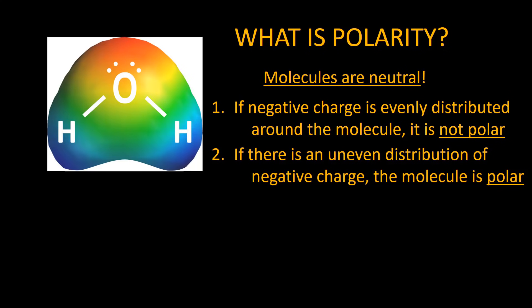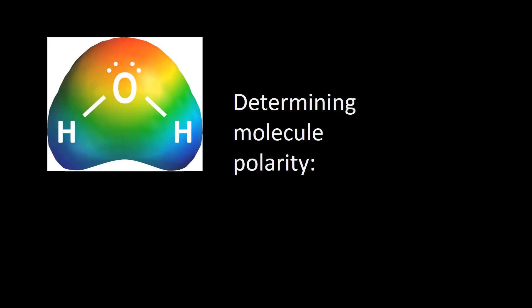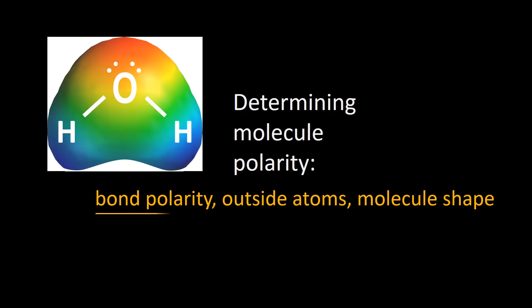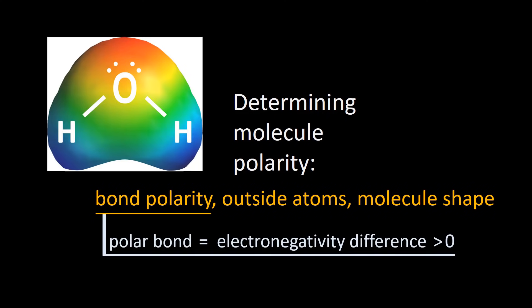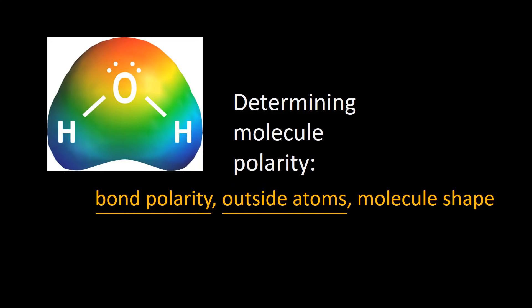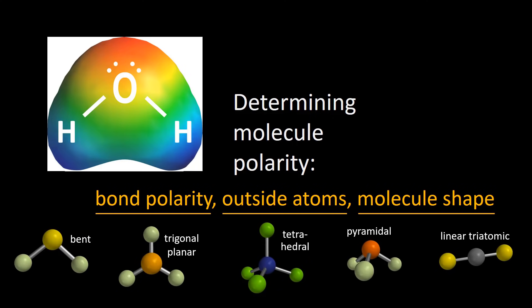But why does this occur? We will take a closer look at water and a variety of other molecules to see what determines whether a molecule is polar, including its bond polarity, where there is an electronegativity difference greater than zero, and also the outside atoms and its molecular shape, including bent, trigonal planar, tetrahedral pyramidal, and linear triatomic. We will go through several examples demonstrating these concepts and then put them in a flowchart.